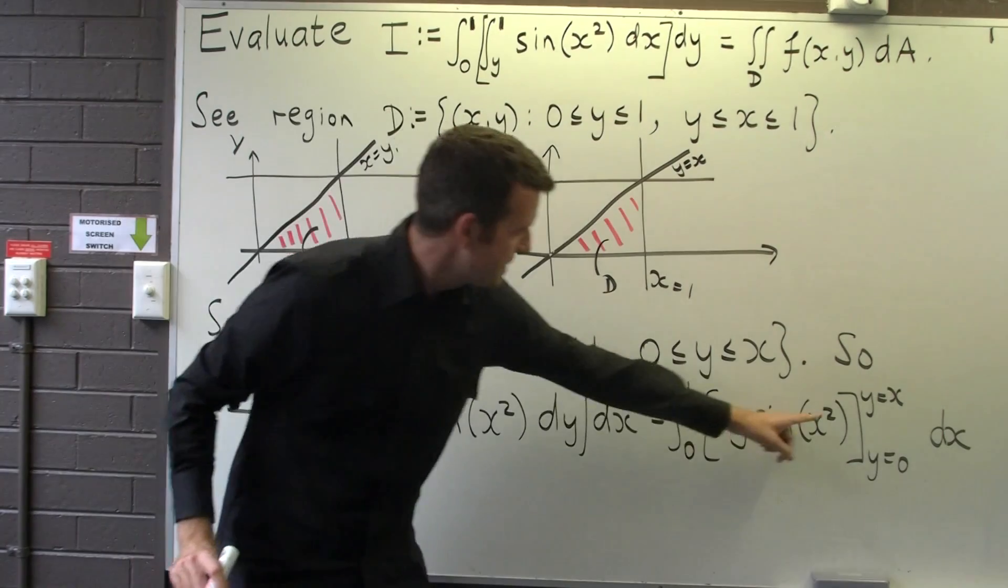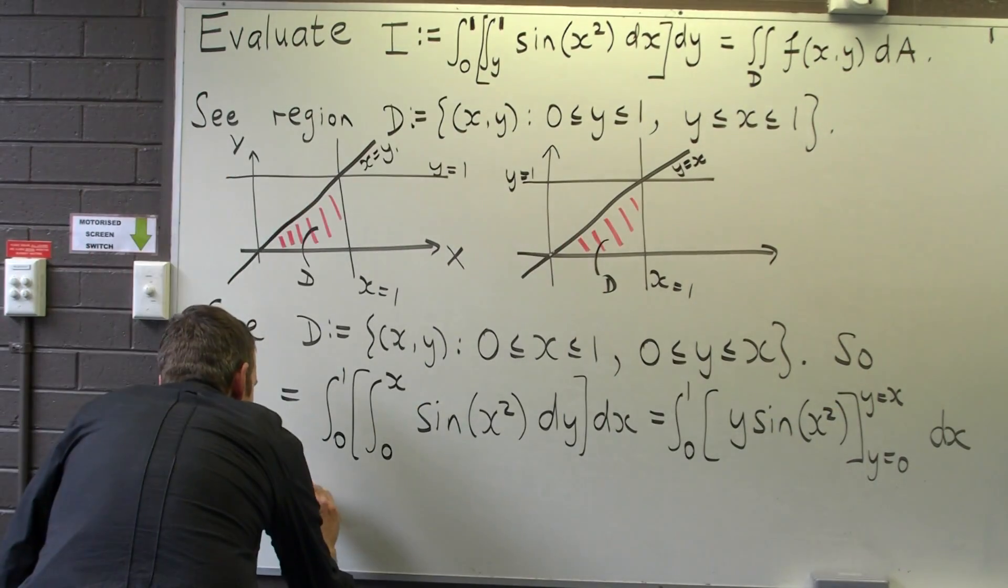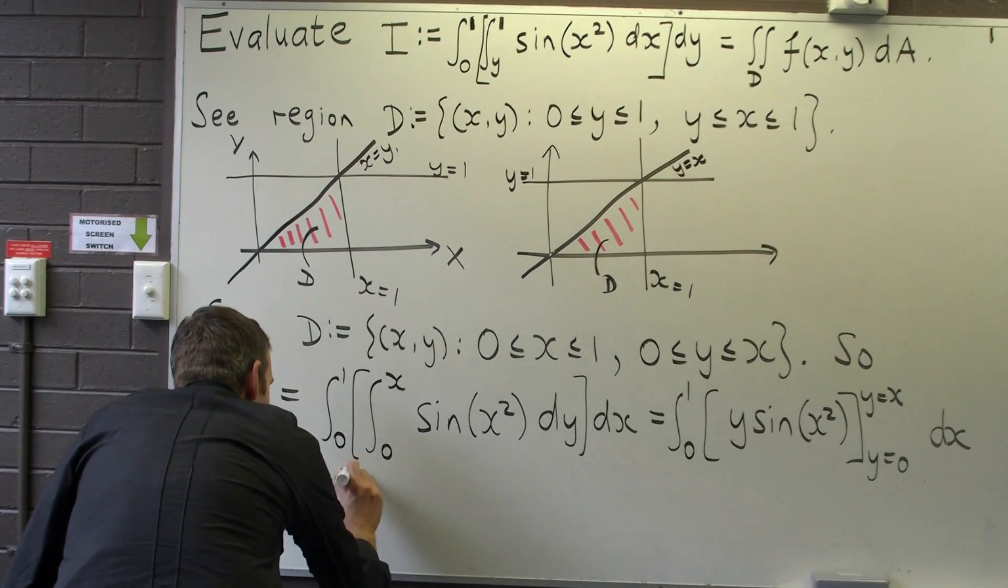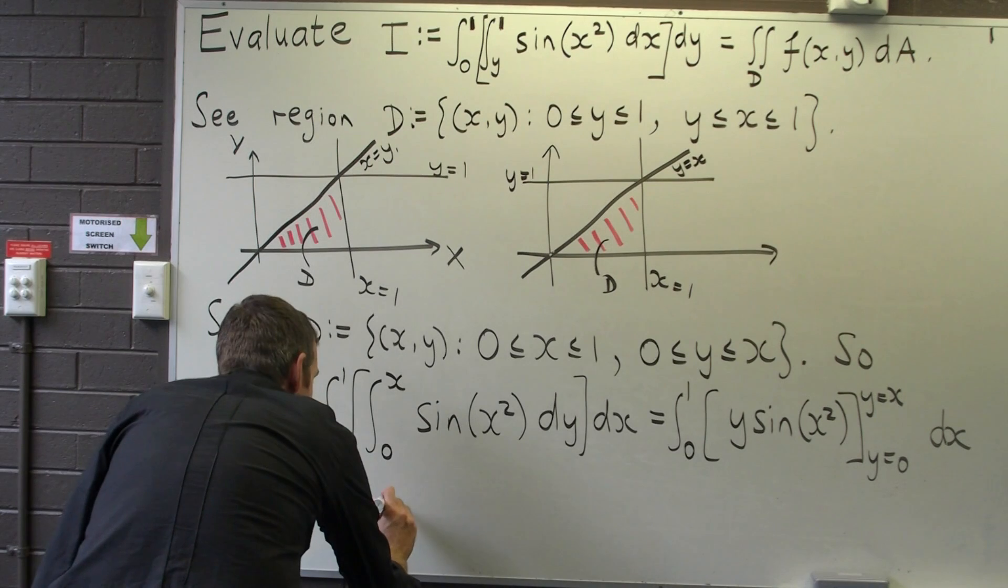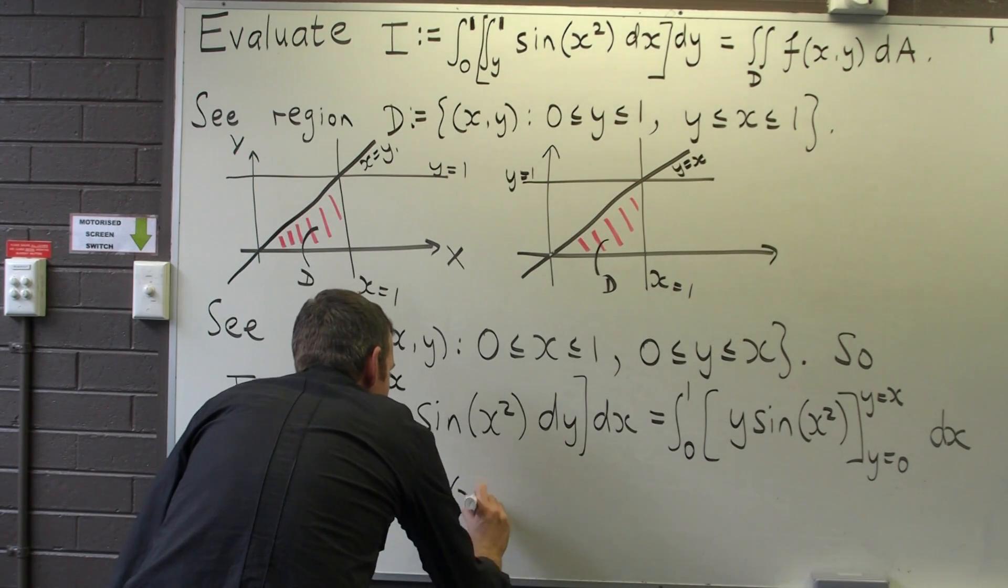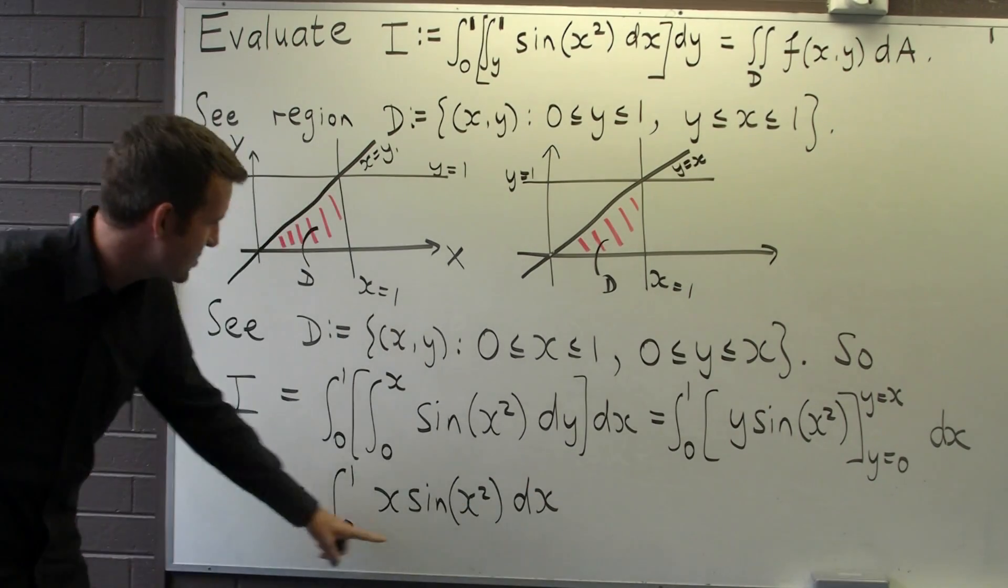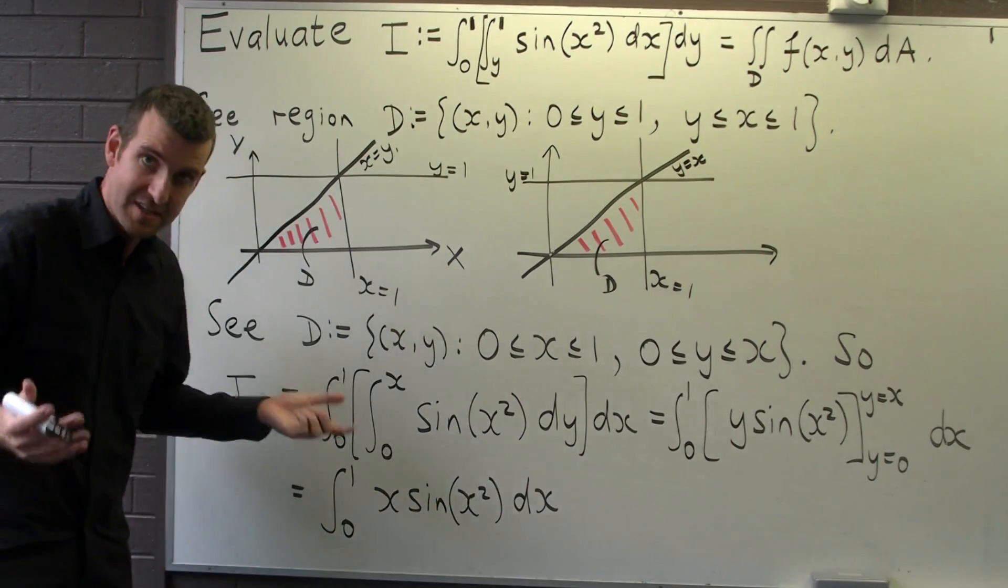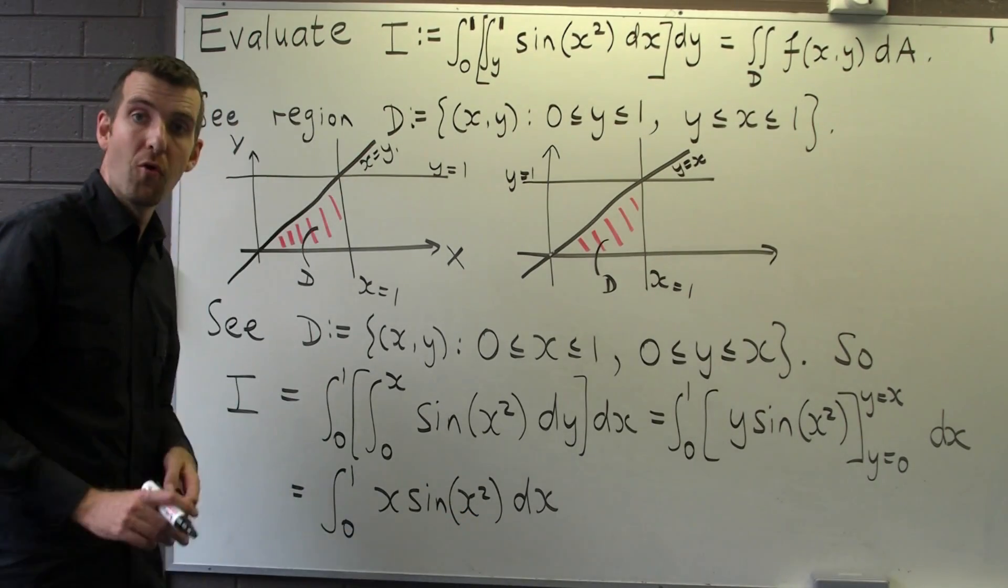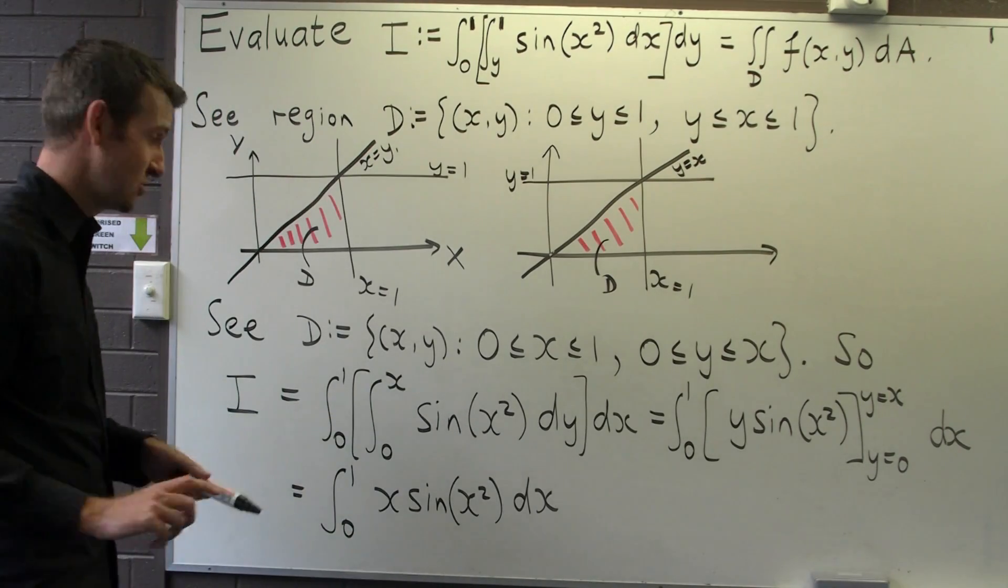Okay, and if I put in y equals x and y equals 0, I reduce it to a single integral. So this is an integral that is just a single integral. We can easily evaluate it either by inspection or by substitution. You would let u equal x squared if you did it by substitution.